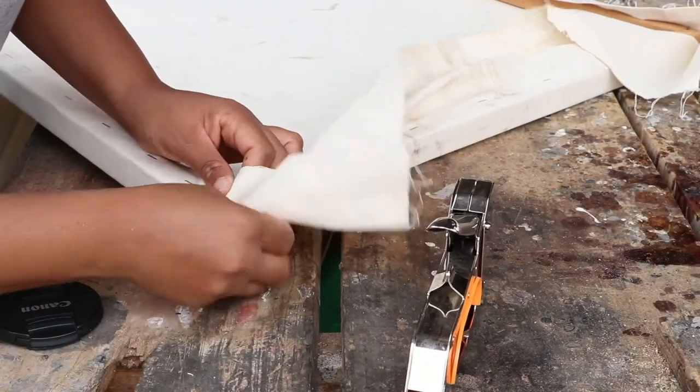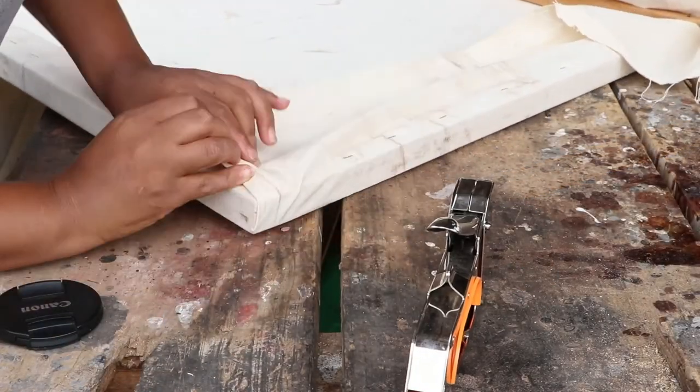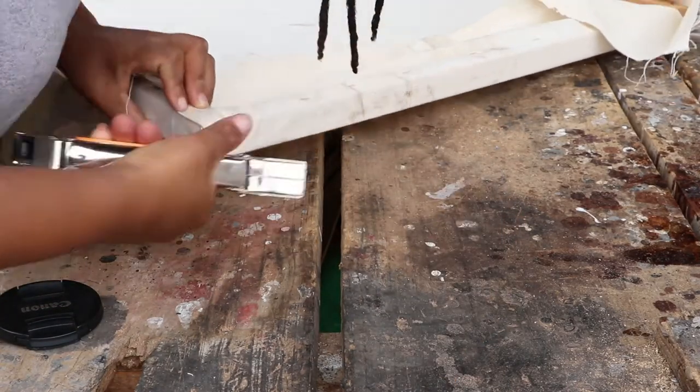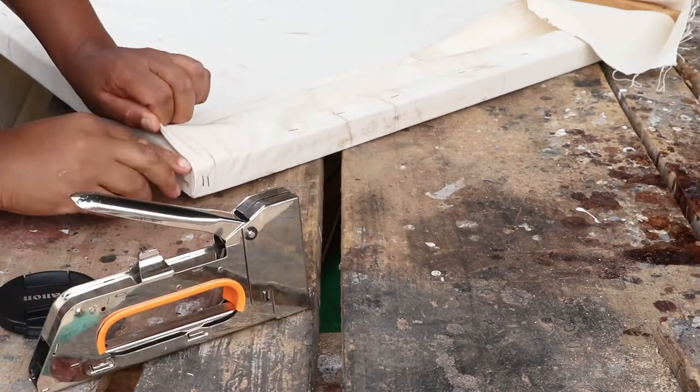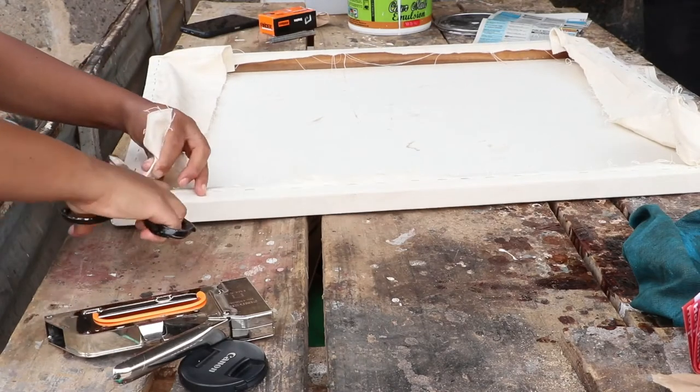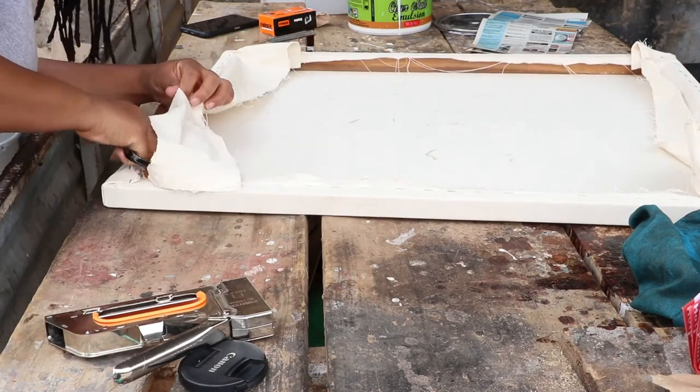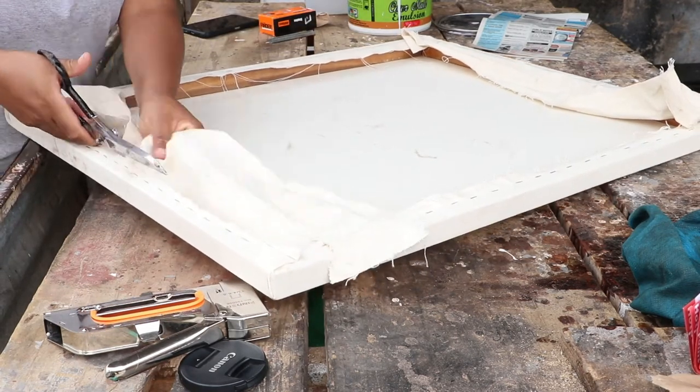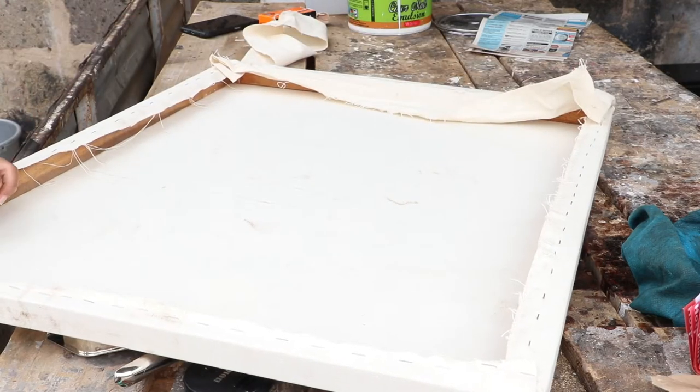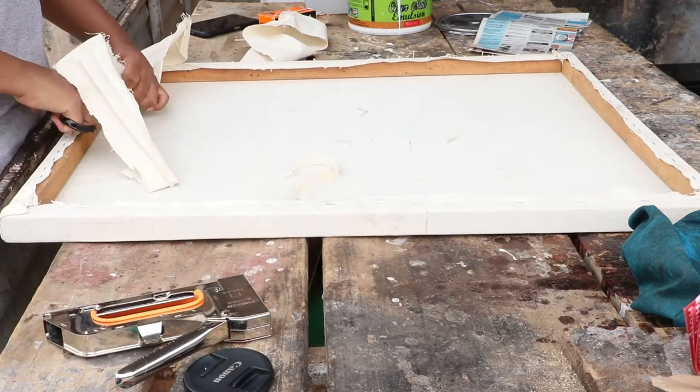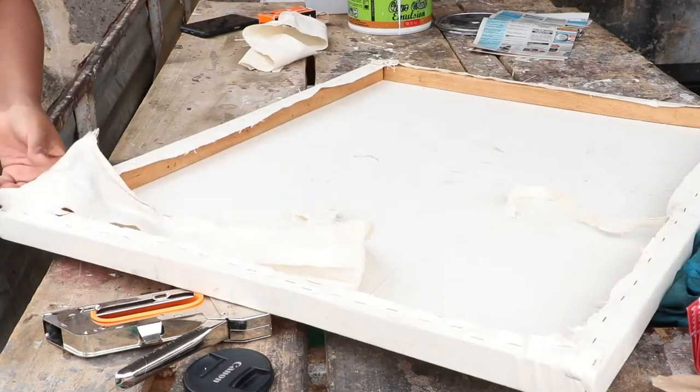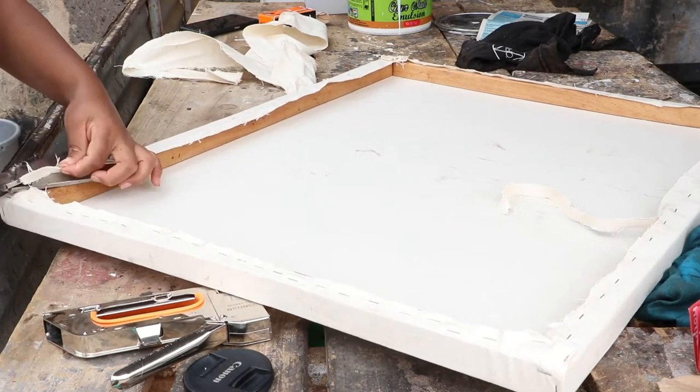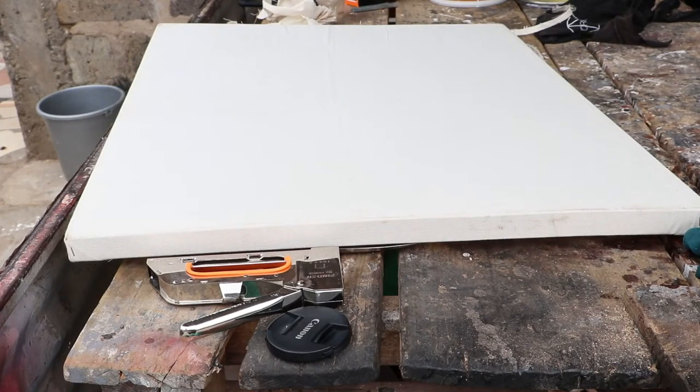I folded the corners nicely and stapled to secure the edges. I then trimmed off the excess fabric. Once it was complete, this is how it looks like.